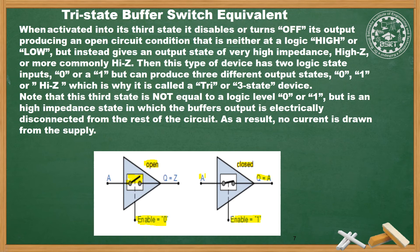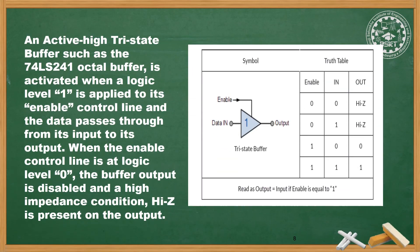It depends on the application which buffer we are going to use — active high or active low type. Depending on the type of buffer, the enable condition will control the buffer output. An active high tri-state buffer, such as the 74LS241 octal buffer, is activated when a logic level 1 is applied to its enable control line and the data passes through from its input to its output. This example is an active high buffer.